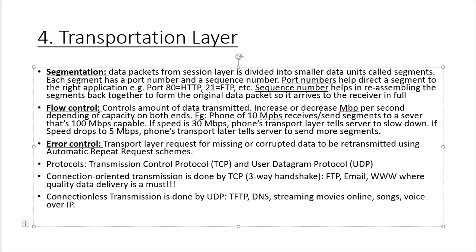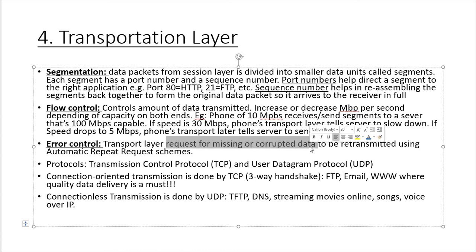The sequence number helps in reassembling segments so the receiver gets the full message. The second function is flow control: if a server transmits at 100 megabytes per second but a cell phone can only process 10 megabytes per second, the cell phone communicates with the server to reduce the transmission speed accordingly. The third function is error control: if data is missing or corrupted, the Transport layer requests retransmission using the Automatic Repeat Request (ARQ) scheme.